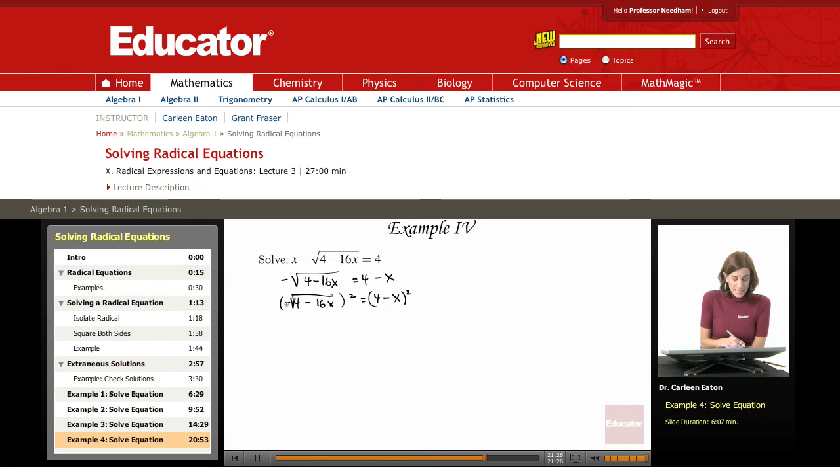Okay, negative 1 times negative 1 is going to give me positive 1. So I'm going to go ahead and eliminate that 1. 4 minus 16x equals, I'm going to rewrite this slightly differently, negative x plus 4 squared.